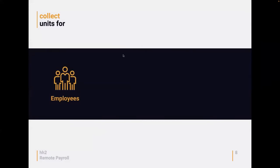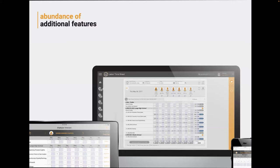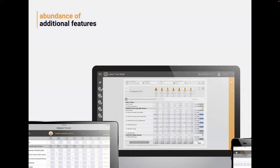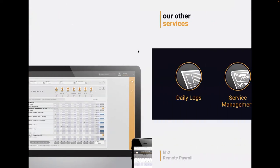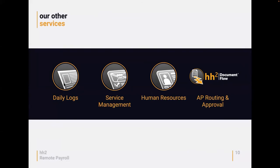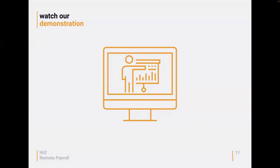People in the field — whether individuals coding time for themselves or foremen coding time for a crew — can both enter time. You can have a customized approval process: office staff time might go straight to payroll, while field employees' time goes through a group manager, then a project manager, then payroll. It's very customizable with multiple time entry methods, multiple pay types, and multiple levels of approval. HH2 also collects units for employees, equipment, mileage, and per diem.